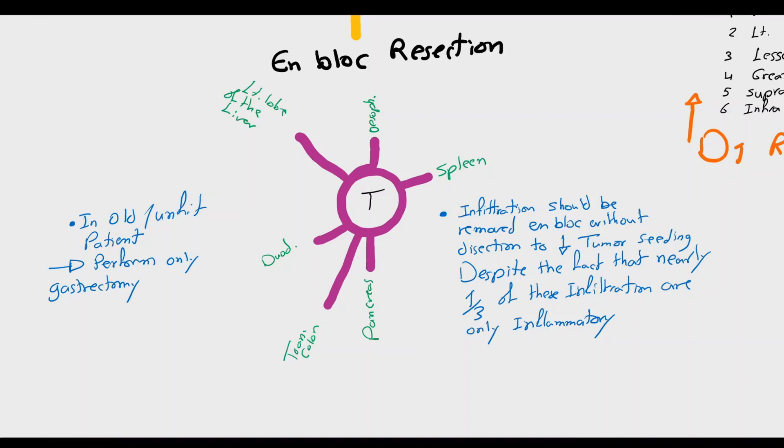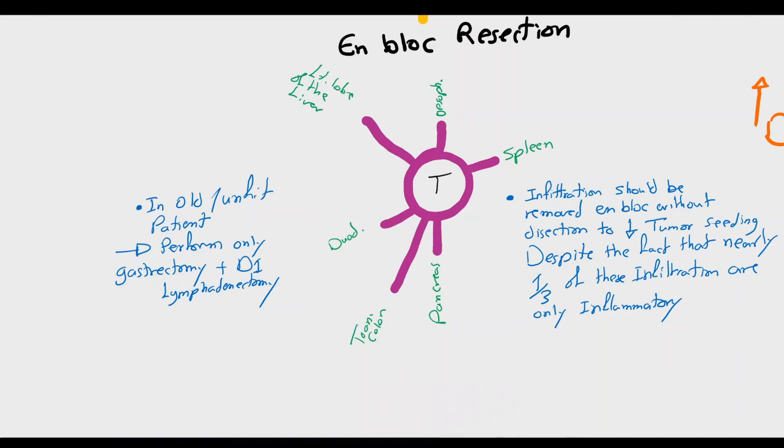Splenectomy can be considered part of gastrectomy and D2 gastrectomy to remove the lymph nodes in the hilum and around the splenic arteries, stations 10 and 11.